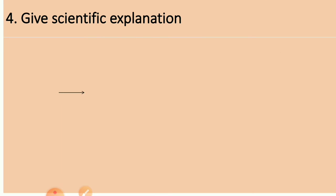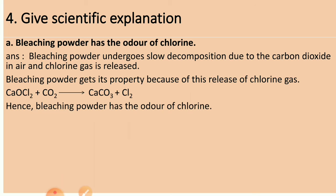Question number 4: give scientific explanations. First: bleaching powder has the odor of chlorine. Answer: Bleaching powder undergoes slow decomposition due to carbon dioxide in the air and chlorine gas is released. Bleaching powder gets its property because of this release of chlorine gas: CaOCl2 + CO2 → CaCO3 + Cl2. Hence, bleaching powder has the odor of chlorine.